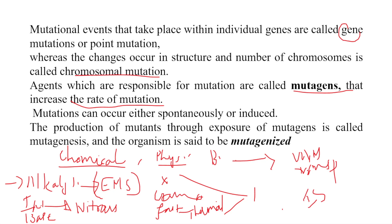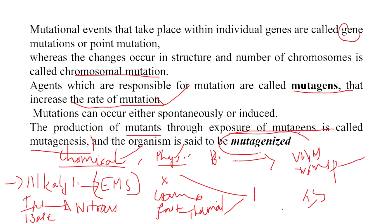Mutations can occur either spontaneously or be induced. The production of mutants through exposure to mutagens is called mutagenesis, and the organism is said to be mutagenized.